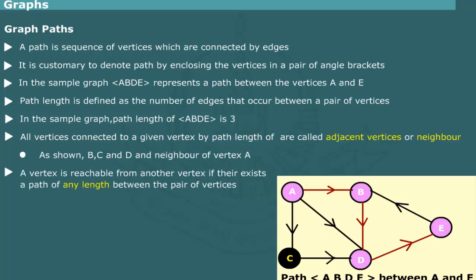A vertex is said to be reachable from another vertex if there exists a path between the vertices. In the figure, vertex b is reachable from vertex a or vertex e, but a is not reachable from any other vertex.